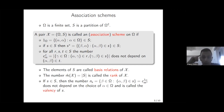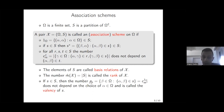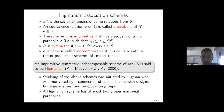The elements from our partition are called basis relations of the scheme X. The number of basis relations is called the rank of X. If s is a basis relation and alpha is an element of omega, then the number of beta from omega such that the pair (alpha, beta) belongs to s does not depend on the choice of alpha, and it is called the valence of basis relation s, denoted by n_s.